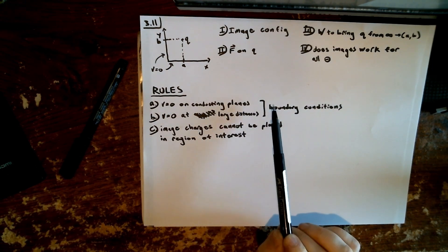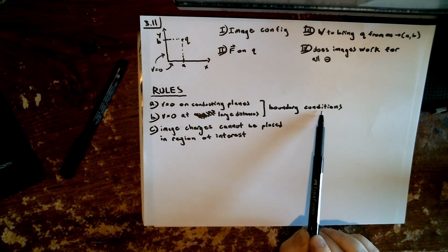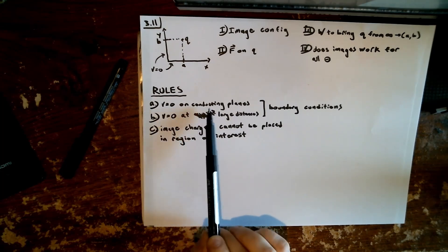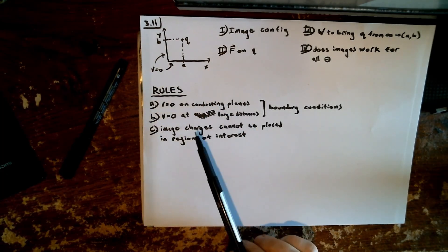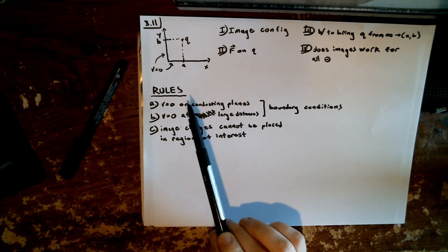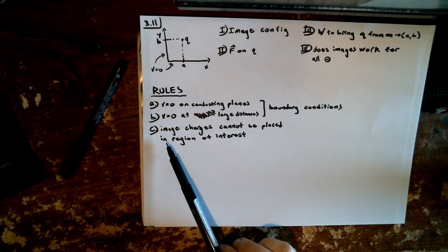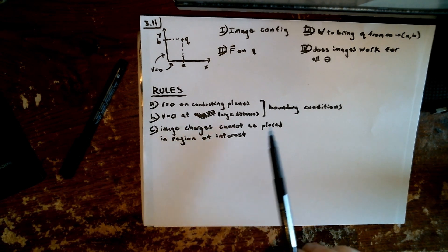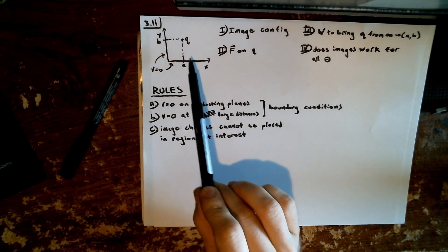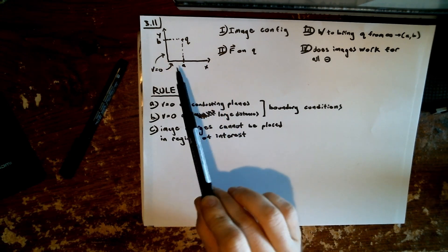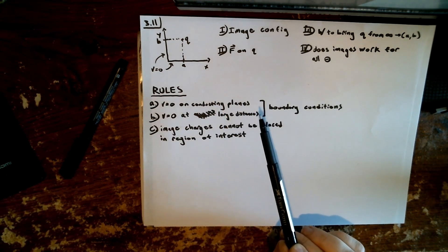To start, we have a few rules we're going to be coming back to. First are boundary conditions: the potential must equal zero on the conducting planes as defined by the problem, and the potential is zero at large distances. Also, the image charges cannot be placed in the region of interest — we can't be introducing imaginary charges into our original region of interest when we're trying to solve the problem.